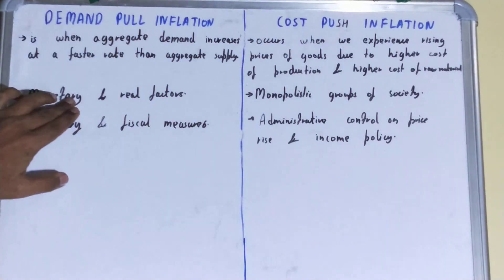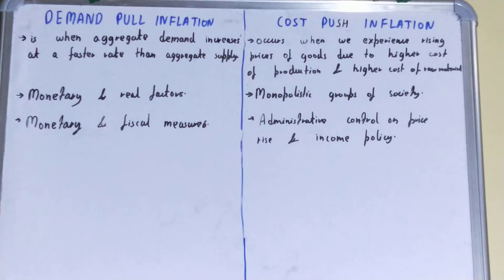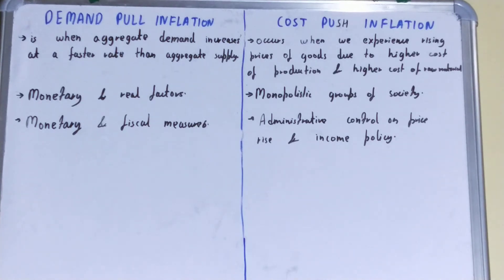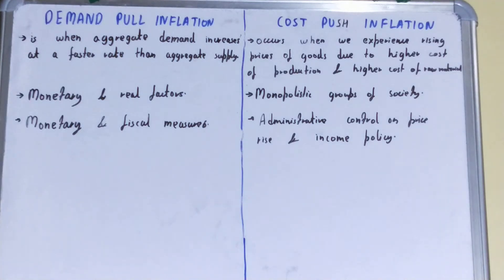Next, by what is it caused? Demand-pull inflation is caused by monetary and real factors. Monetary — like when people have more money, they will buy more of that particular product, which will increase demand. Another reason is real factors, due to which the need for that particular product is increased, ultimately increasing demand. But the supply is fixed, so it causes demand-pull inflation.